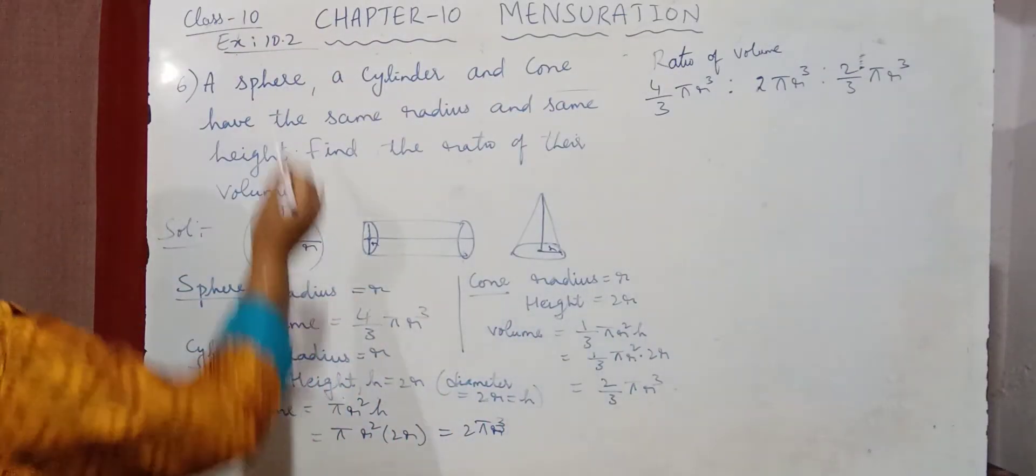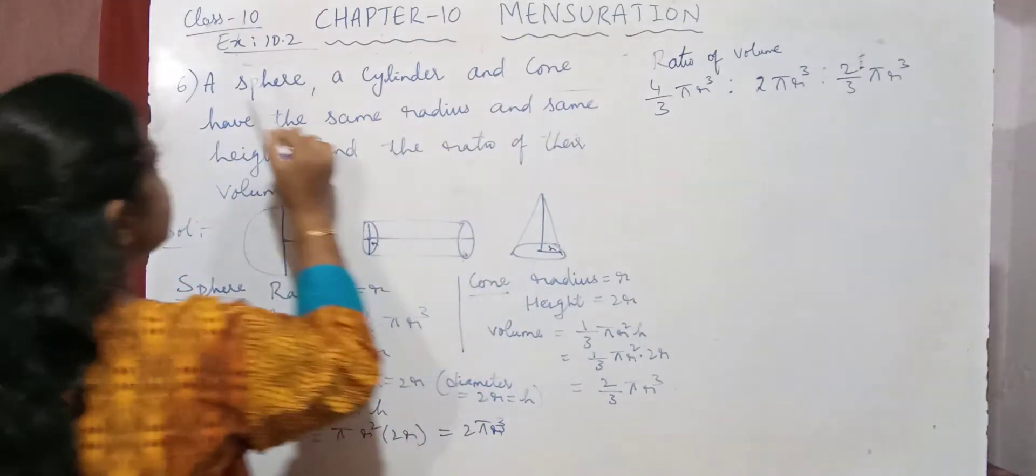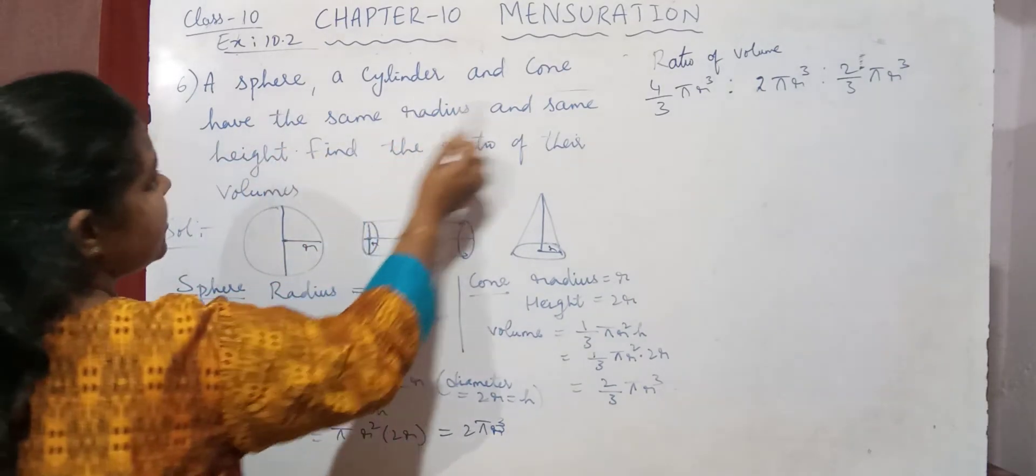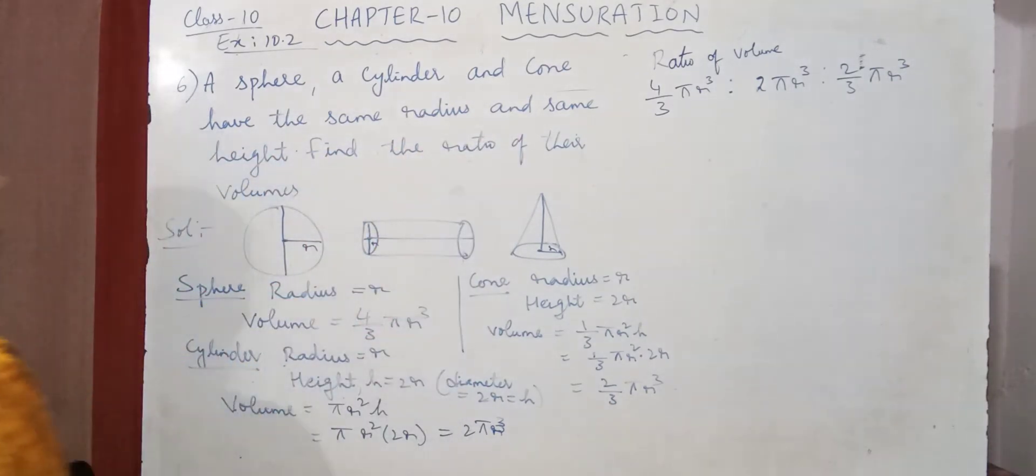Hello children, so in your 10th class mathematics under chapter 10 mensuration in exercise 10.2, this is the 6th one. A sphere, a cylinder and a cone have the same radius and same height, find the ratio of their volumes.